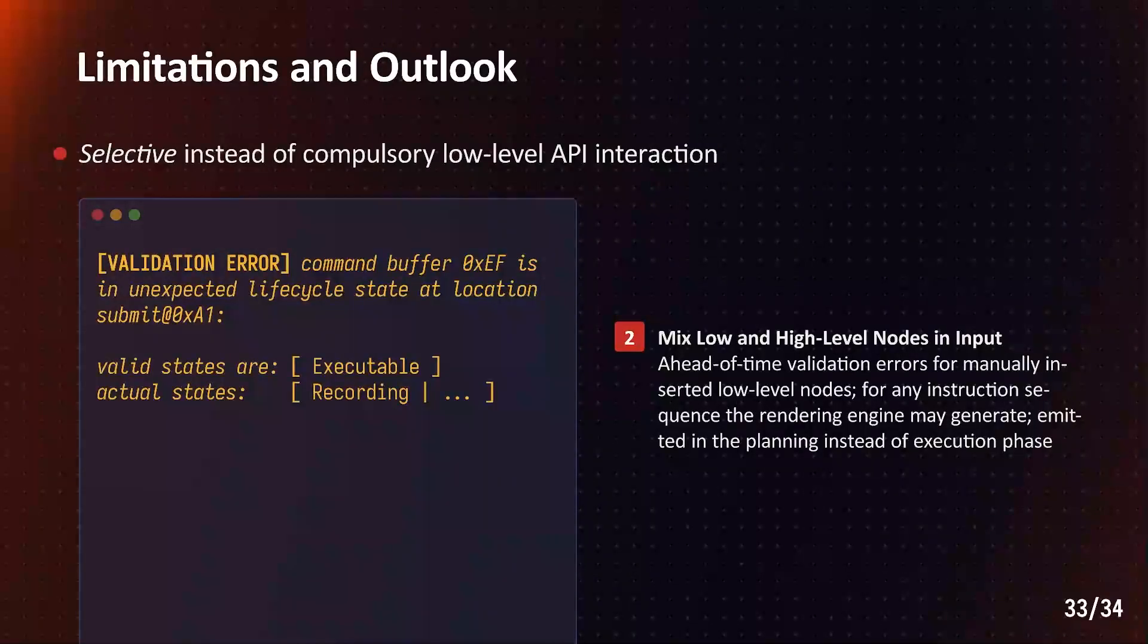And, if you happen to write this code manually, we have enough information in the graph to emit validation errors ahead of time, even before we allocate any GPU state or start execution. In this example, we forgot to end the command buffer recording before submission.